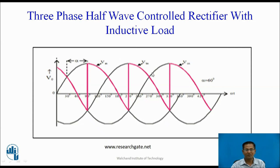These are the waveforms for alpha equal to 60 degree. At omega t equal to pi by 6 plus alpha, the gate pulse is applied to thyristor T1. Once T1 conducts, phase VAn appears across the load. T1 continuously conducts up to the end of the half-cycle, meaning from pi by 6 plus alpha to pi, T1 conducts and power is supplied by the source. The converter operates in rectification mode, where power flows from source to load.